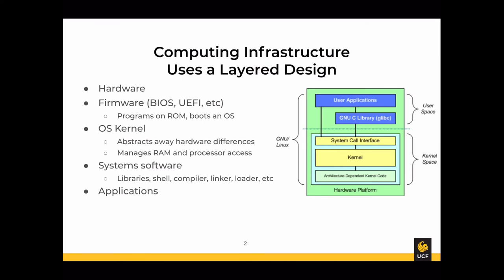Computing infrastructure uses a layered design. At the bottom of this infrastructure is the hardware itself — your motherboard, Ethernet cards, Wi-Fi cards. Between the software on your machine and the hardware is the firmware layer. Firmware is essentially hard-coded software, and it's what gets run initially when you power on your machine.